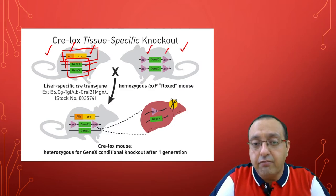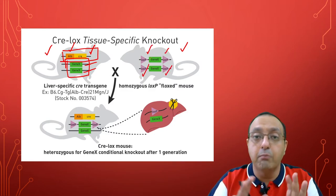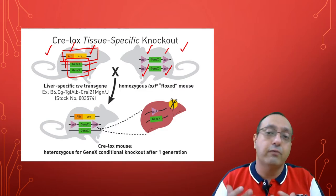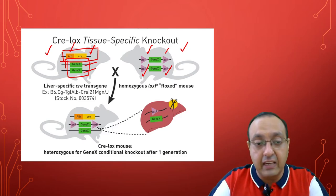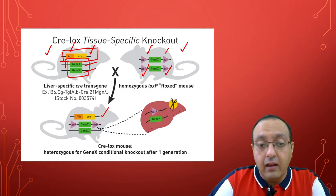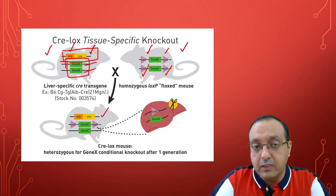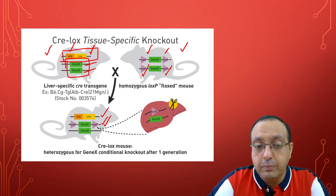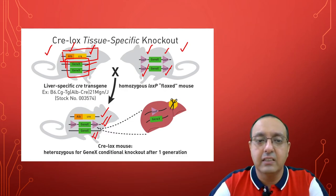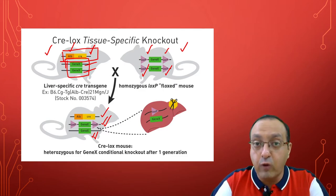In the second mouse strain, we have created LOXP sites flanking the gene of interest on both copies. This mouse has no defects because the gene has not been removed — it simply has LOXP sites flanking it. After crossing these two mice, the offspring will carry one copy of the CRE recombinase, plus both a LOXP-flanked copy and a wild-type copy of the gene.